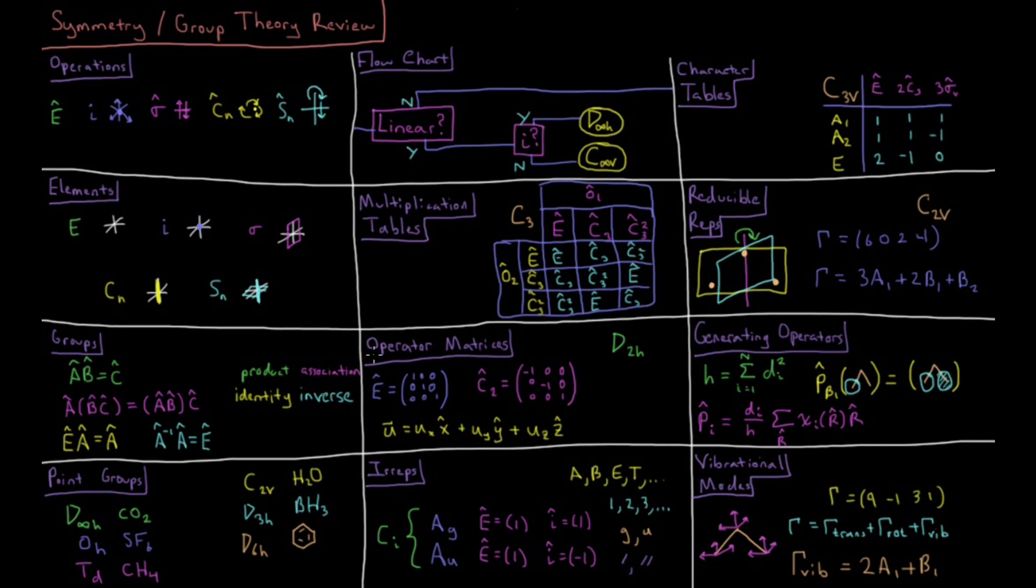These operators can also be defined in terms of matrices, which reflect how they act upon a given vector, which is defined in three-dimensional Cartesian space. So the matrix operating on this vector gives a result which is consistent with the symmetry operator acting on that vector.